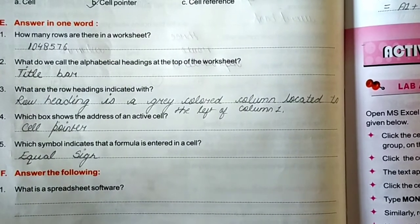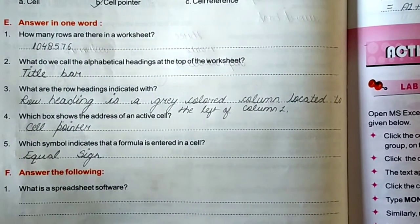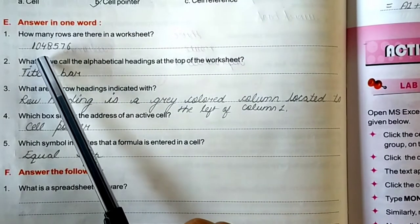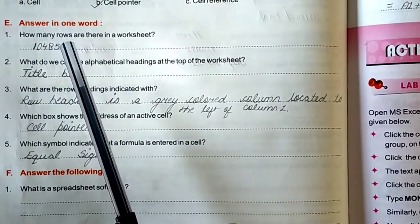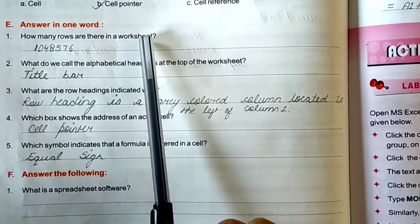Now, answer in one word. Question first is, how many rows are there in a worksheet? 1,048,576 rows are there in a worksheet.